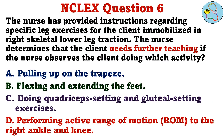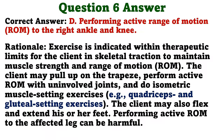The nurse has provided instructions regarding specific leg exercises for a client immobilized in right skeletal lower leg traction. The nurse determines that the client needs further teaching if the nurse observes the client doing which activity? A. Pulling up on the trapeze. B. Flexing and extending the feet. C. Doing quadriceps setting and gluteal setting exercises. D. Performing active range of motion to the right ankle and knee. The correct answer is D. Exercise is indicated within therapeutic limits for the client in skeletal traction to maintain muscle strength and range of motion. The client may pull up on the trapeze, perform active range of motion with uninvolved joints, and do isometric muscle setting exercises. The client may also flex and extend his or her feet. Performing active range of motion to the affected leg can be harmful.